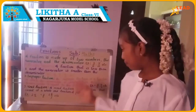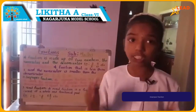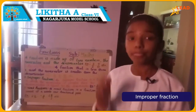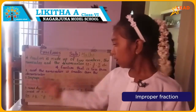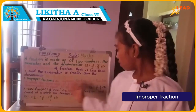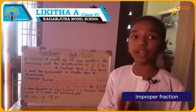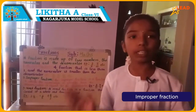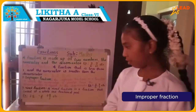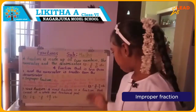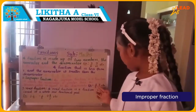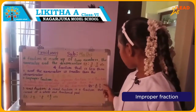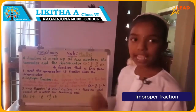Improper fraction. An improper fraction is a fraction in which the numerator is greater than the denominator or equal to the denominator. For example, 3 by 2, 7 by 7, etc.